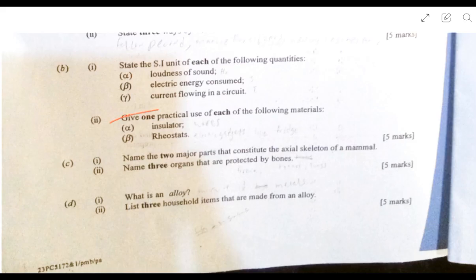Give one practical use of the following. An insulator is used on cooking utensils that are mostly heated, so the handles of cooking utensils. A rheostat is used in fridges, air conditioners, and irons to regulate the temperature at which they operate.